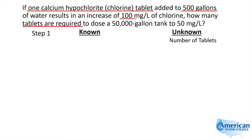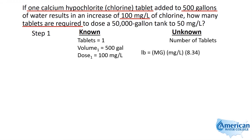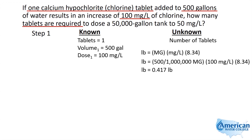We know that one tablet added to 500 gallons gave us 100 milligrams per liter — that's scenario one. So if we want to calculate how many pounds for every one tablet added, we just use this formula. We take our 500 gallons and divide by a million, times our dose of 100 milligrams per liter, times 8.34 — that gives us 0.417 pounds for every tablet. So every tablet in this case will give us 0.417 pounds of chlorine.